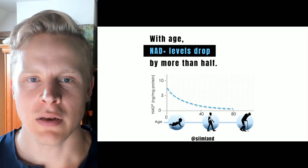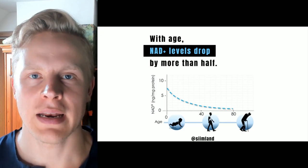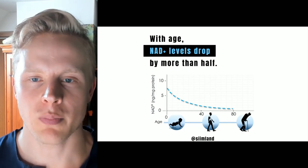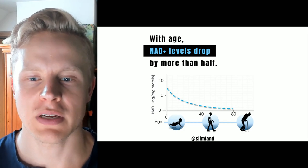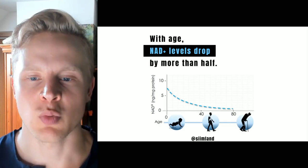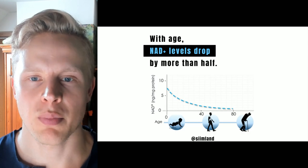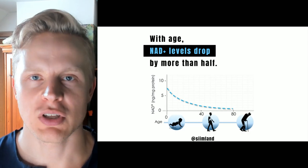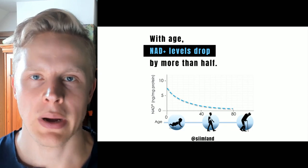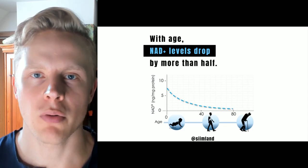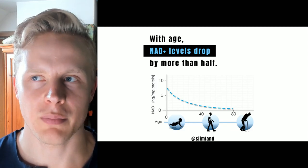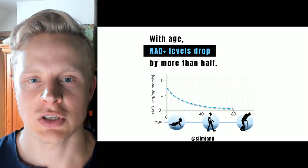With age, your NAD levels drop quite significantly — more than 50% after your 30s or so. And that is one of the reasons why you start to see these age-related comorbidities and age-related issues. Your NAD levels go down, and because of that it's basically harder for your body to stay healthy because of its lack of energy and lack of NAD.